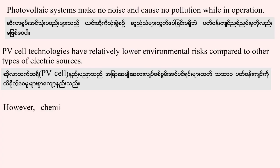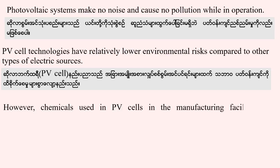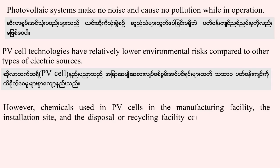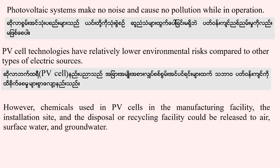However, chemicals used in PV cells in manufacturing facilities, the installation site, and the disposal or recycling facilities could be released to air, surface water, and groundwater.